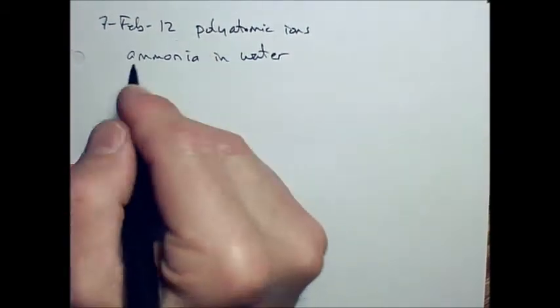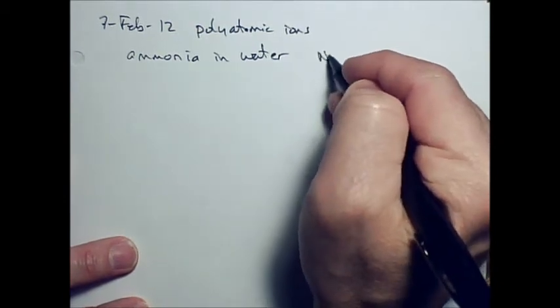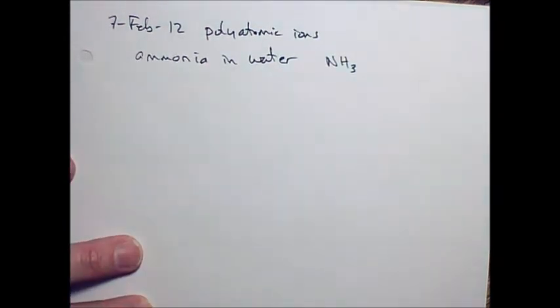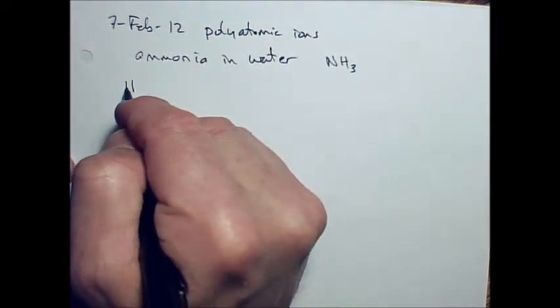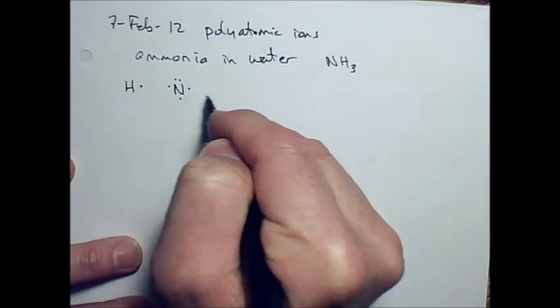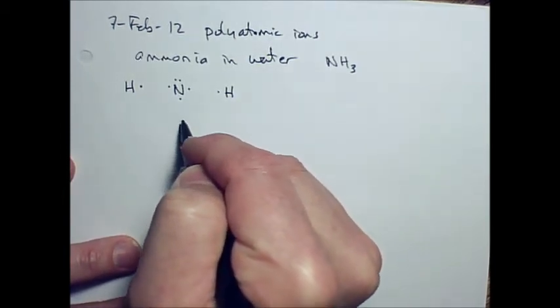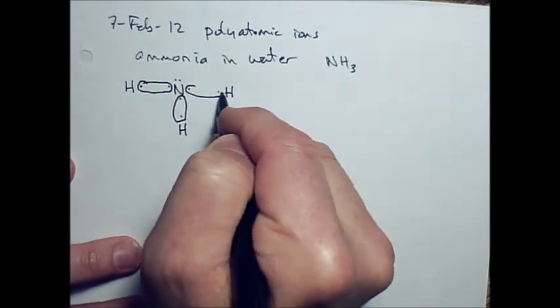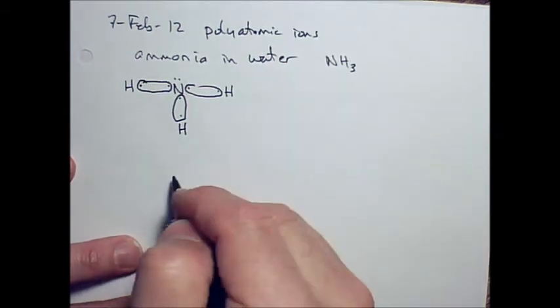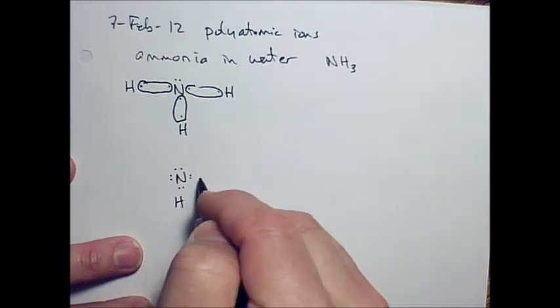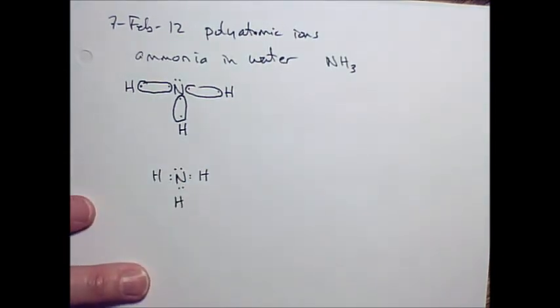So ammonia, remember, is one of the formulas you have to memorize: NH3. If we put nitrogen and three hydrogens together, we did this yesterday, we have one hydrogen with one electron, nitrogen with five electrons. And when we finish with the whole thing, we get a Lewis dot formula that looks like this. So we squeeze those electrons together and we get that Lewis dot formula.